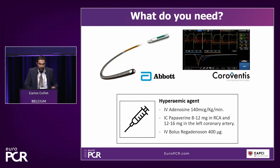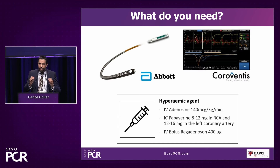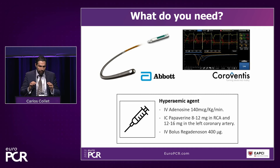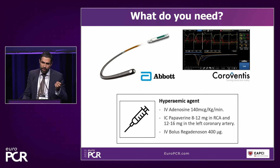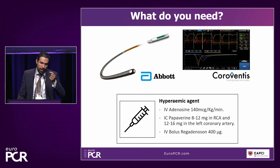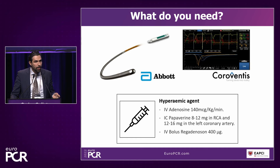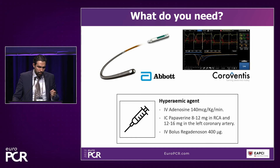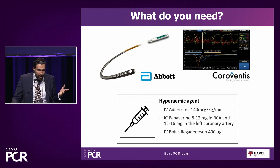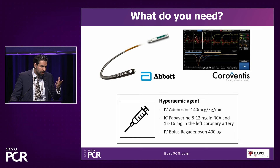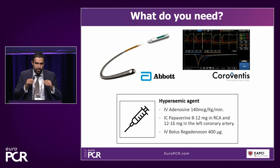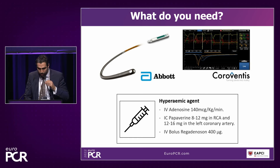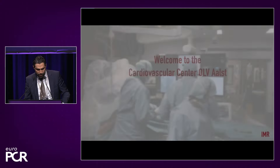The three things you need to start assessing the coronary microcirculation are: one, the PressureWire X from Abbott, which has in addition to the pressure sensor a temperature sensor at the tip; two, the CoroVentis console to sense changes in temperature; and three, a hyperemic agent. Classically IV adenosine has been used, and this is most common in some labs. The case will be done with IV adenosine, but we have now shifted to papaverine, which also makes things very simple. We're going to see a video of how easy these measurements are performed in the cath lab.